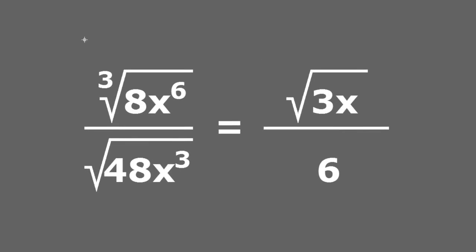So we started with the cube root of 8x to the sixth power divided by the square root of 48x cubed, and that simplified to just the square root of 3x divided by 6.